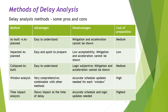Window analysis is very comprehensive and has the advantage that it can be combined with other methods. The disadvantages are that accurate schedule updates are needed for each of the windows, and the cost of preparation is high. For Time Impact Analysis — perhaps the only method where you can identify mitigation and acceleration — it also needs very accurate schedule and logic updates, shows the impact at the time of the delay, and has the highest cost of preparation.